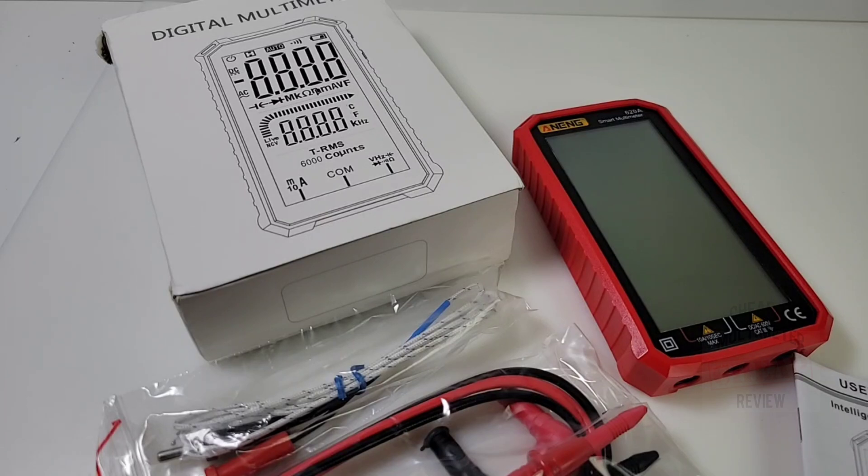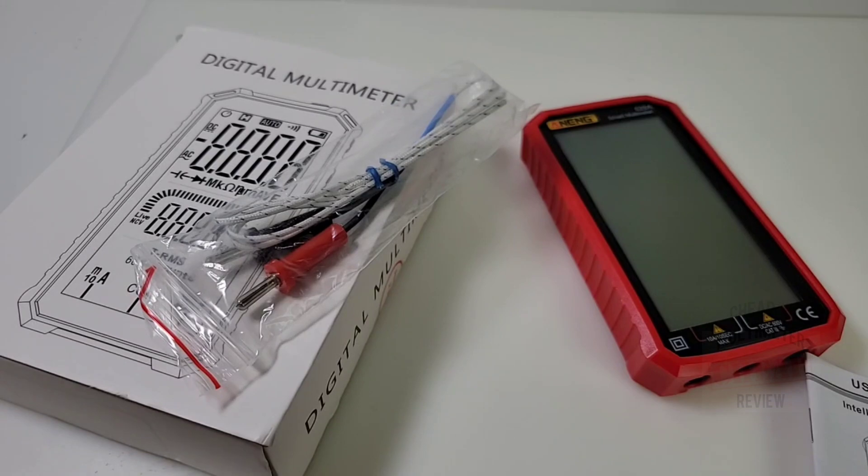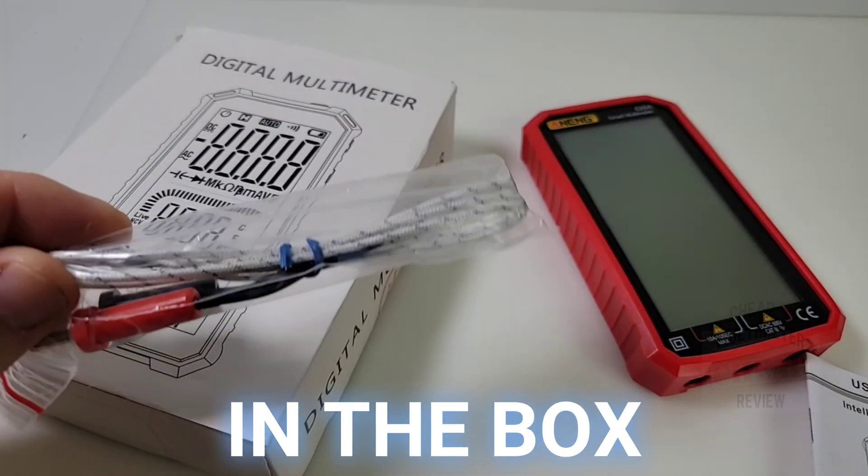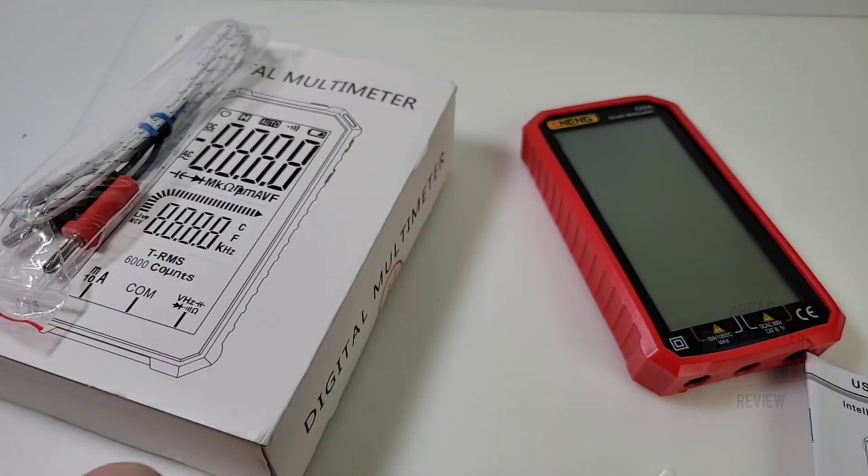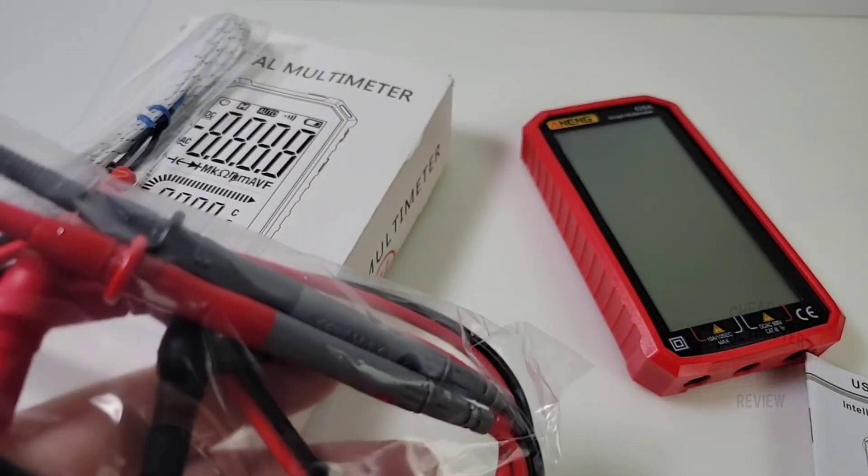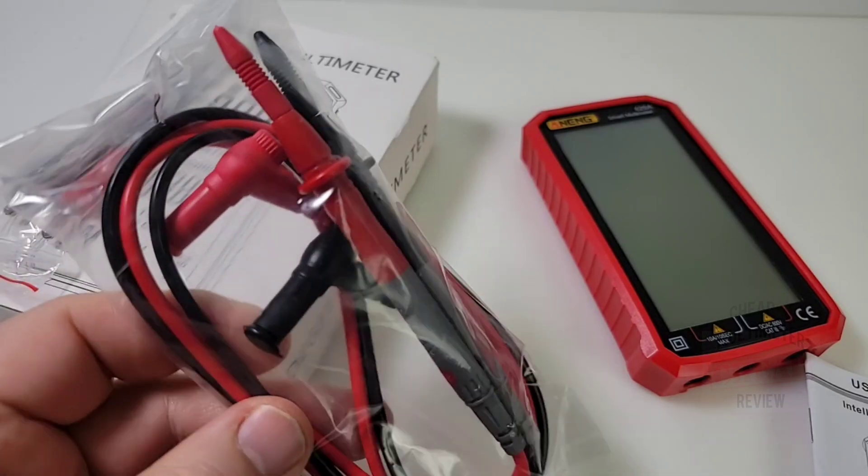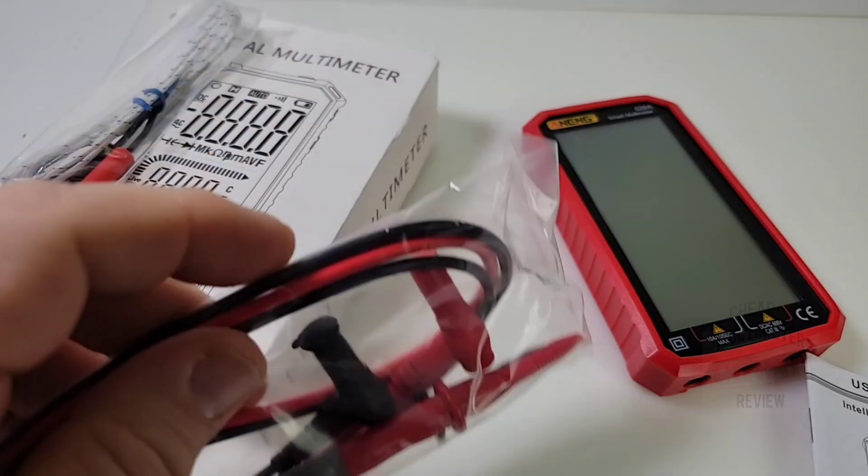This one has that oh so modern look and design. We have a thermocouple because it does temperature, hopefully with an ambient sensor so we don't need this all the time. Also comes with a standard set of test probes, the typical probes you see with most ANENGs. They're okay, nothing to write home about, but they get the job done.